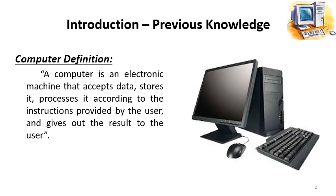So a computer performs these four basic functions: it accepts data, it processes data, it gives output, and it can also store the results or data and information for future use. This is the simple definition of a computer system: an electronic machine that accepts data, stores it, processes it according to the instructions provided by the user, and gives out the result to the user.